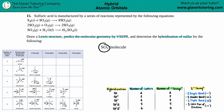We have SO3. The least electronegative atom goes in the middle, and between sulfur and oxygen, sulfur is less electronegative. So sulfur goes in the middle, surrounded by three oxygens — one, two, and three. Make it as symmetrical as you can.